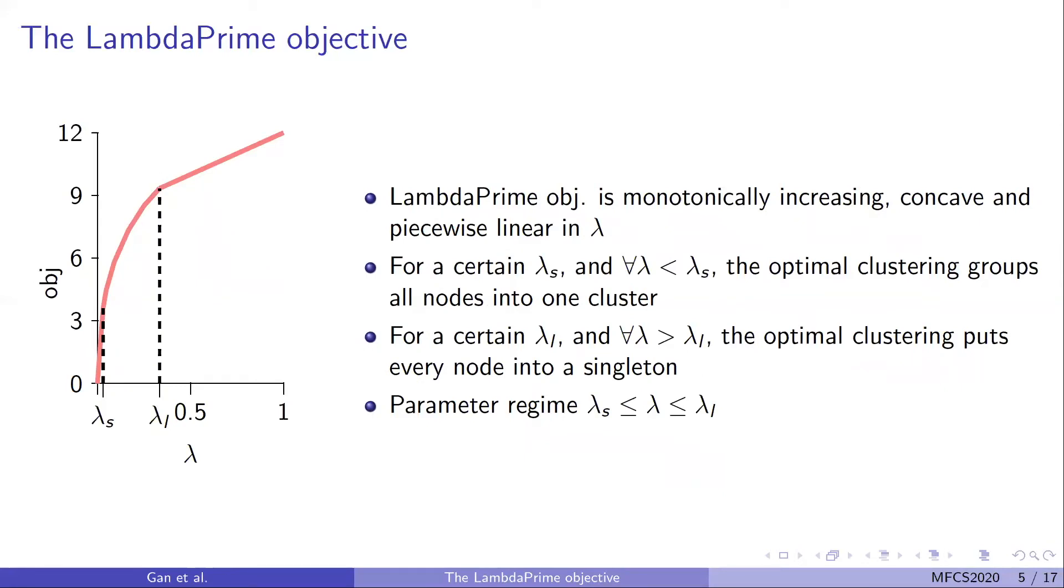LambdaPrime objective can be seen as a function of lambda. For every lambda, we can define an objective, solve an optimal solution, and the optimal solution has a cost, which we call the objective function value. We can show that the LambdaPrime objective value function is monotonically increasing, concave, and piecewise linear in lambda. Moreover, we do not care when lambda is too large or too small, because in either case, the optimal solution is trivial. If lambda is smaller than lambda_s, the optimal clustering groups all nodes into one cluster. If lambda is greater than lambda_L, the optimal clustering puts every node into a singleton. Therefore, we only care about lambda values in the parameter regime between lambda_s and lambda_L.